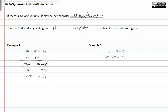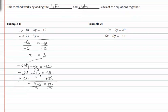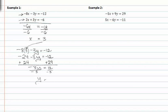Once I have three, I can take either one of my original equations and substitute for x. I'm going to take the first equation, negative eight x minus three y equals negative twelve. Notice that I've substituted three in for x. This gives me negative twenty four minus three y equals negative twelve. Adding twenty four to both sides, I get negative three y equals twelve. Dividing by negative three gives me y equals negative four.